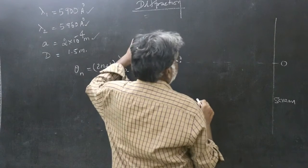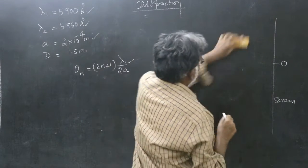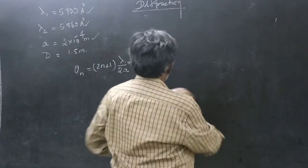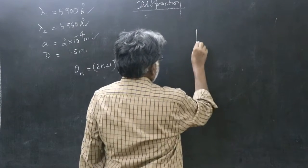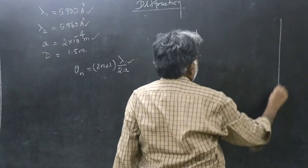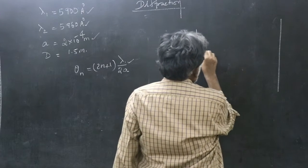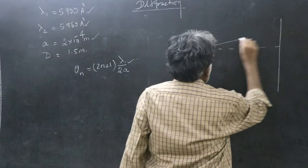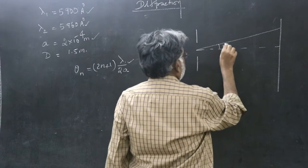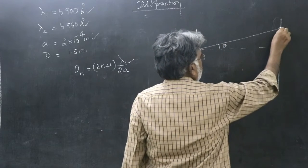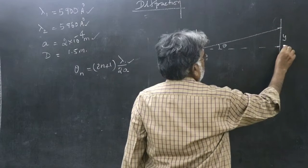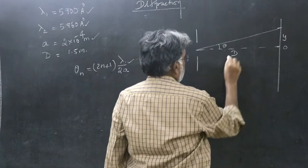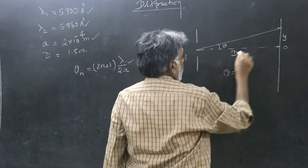I just draw another diagram. See here, there is a relation connecting linear separation and angular separation which is very important. Let us say this is the angular separation. This is y. Let us say this is central maximum. This is D. So, theta is y by D.